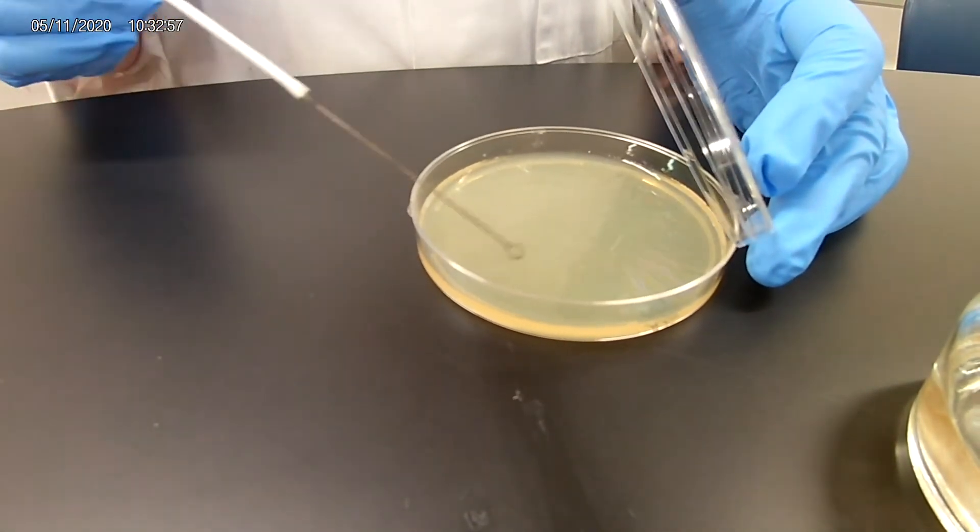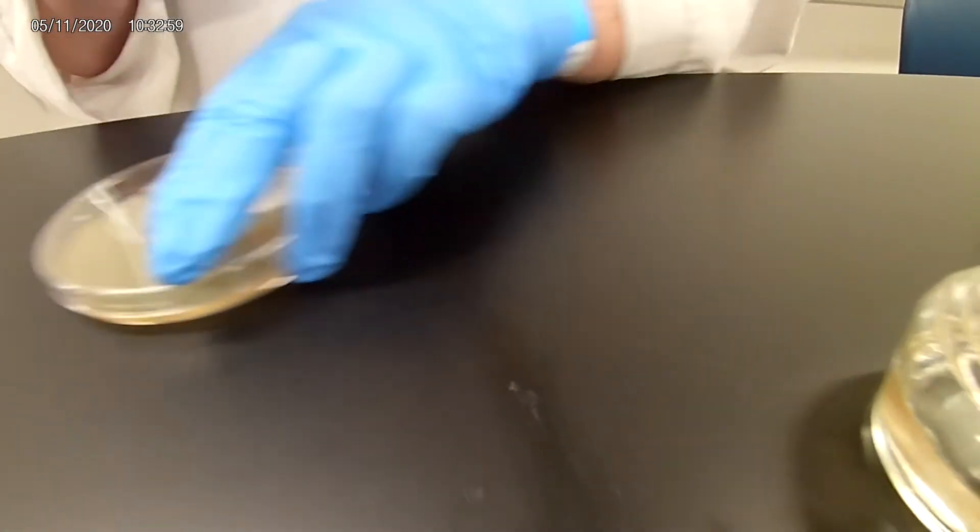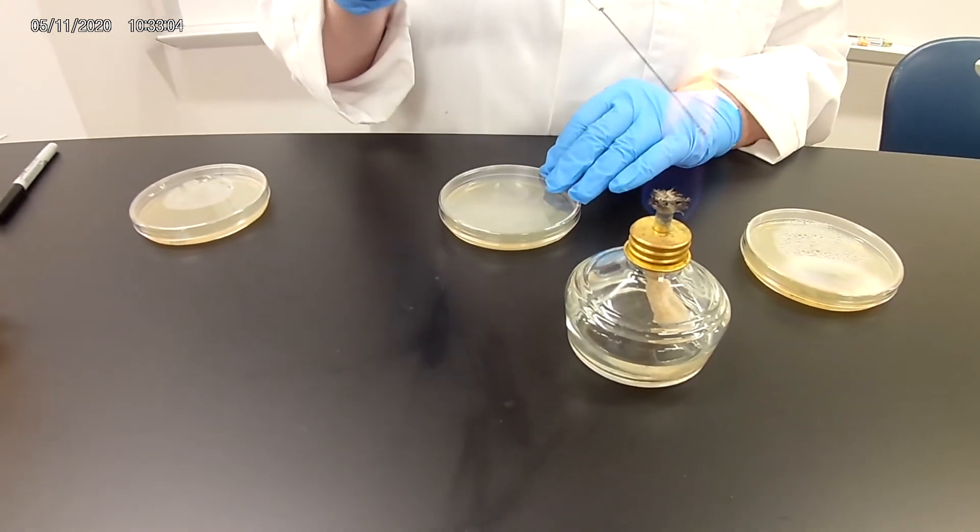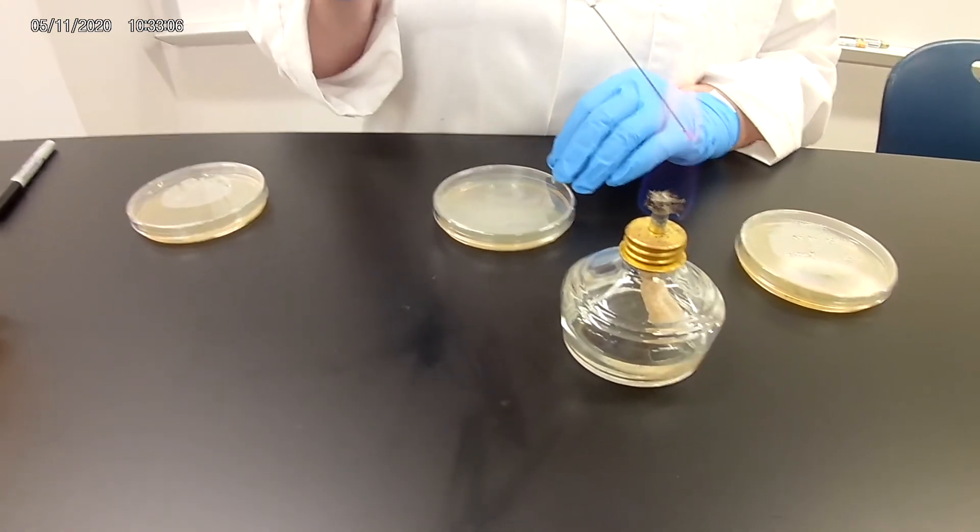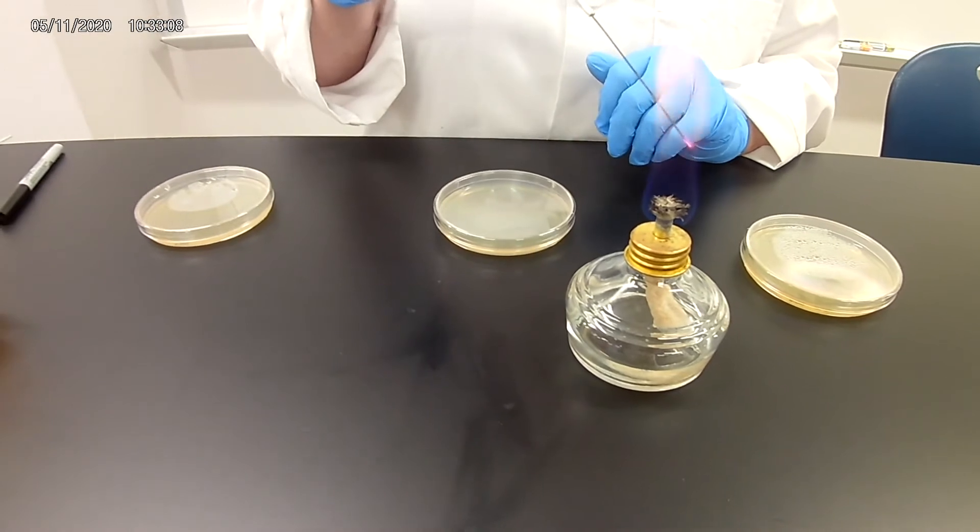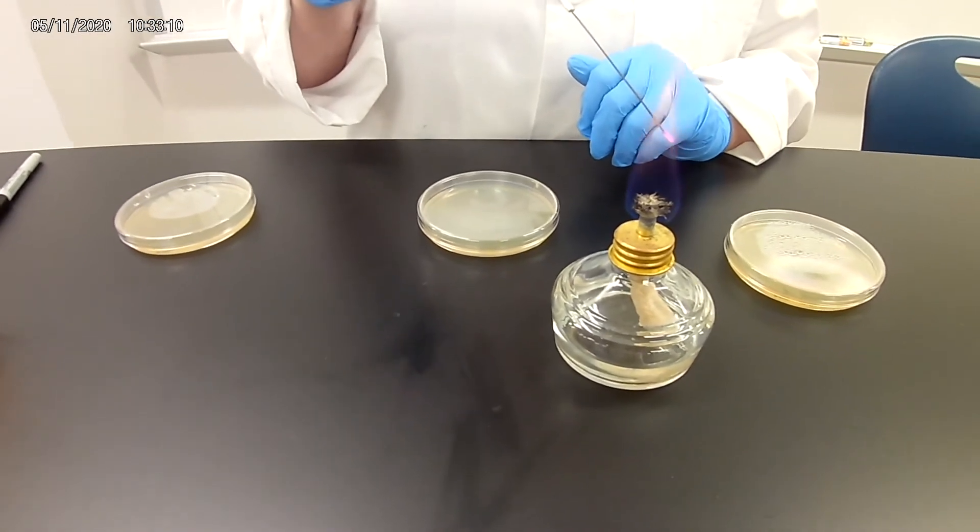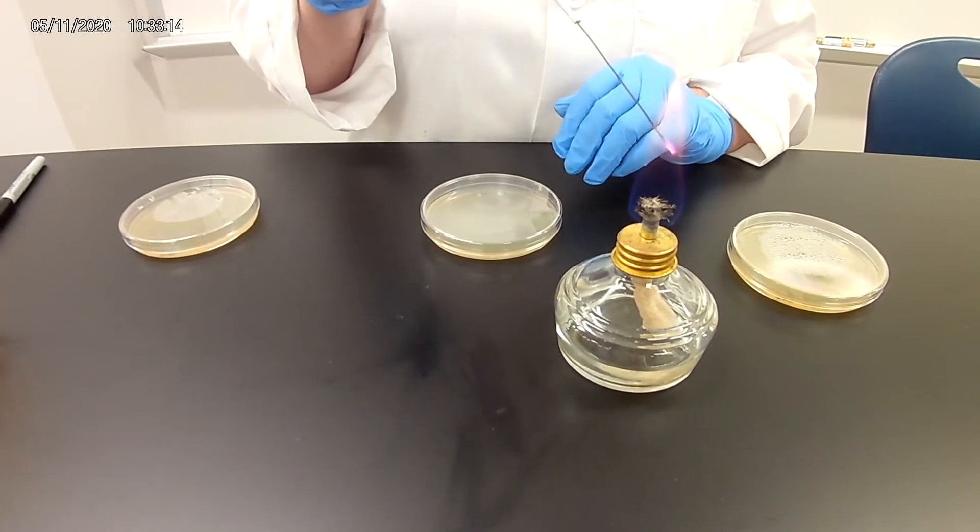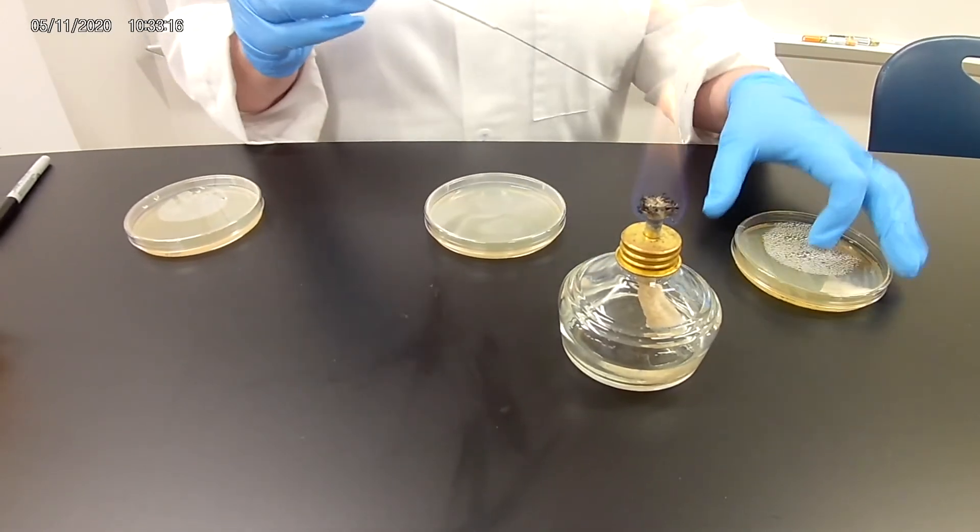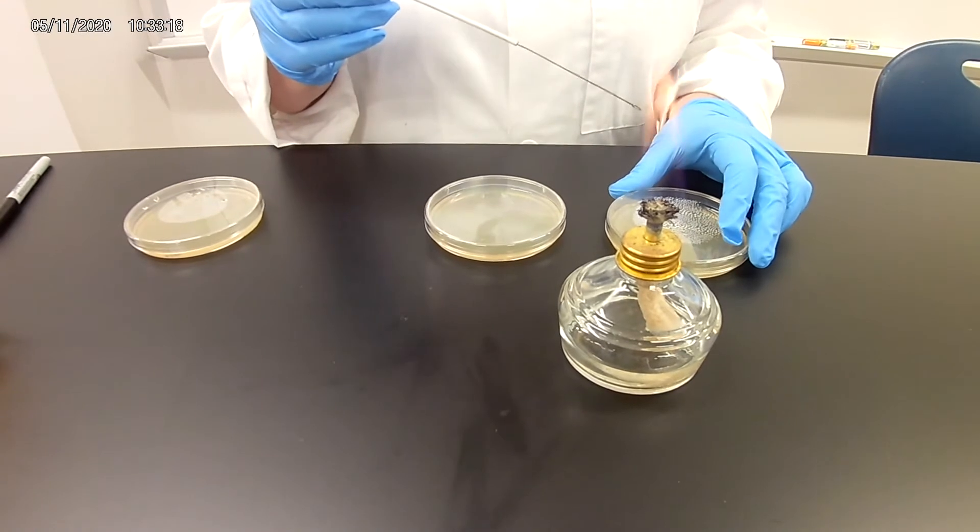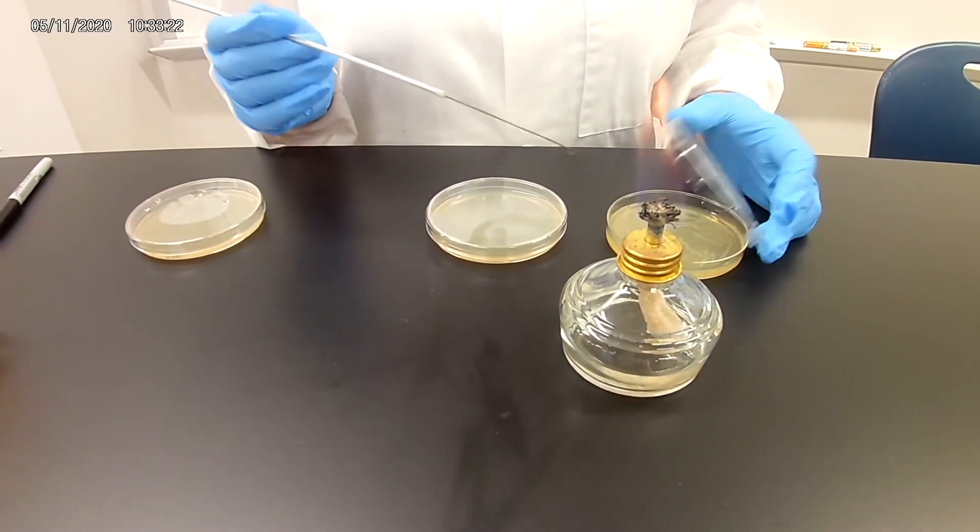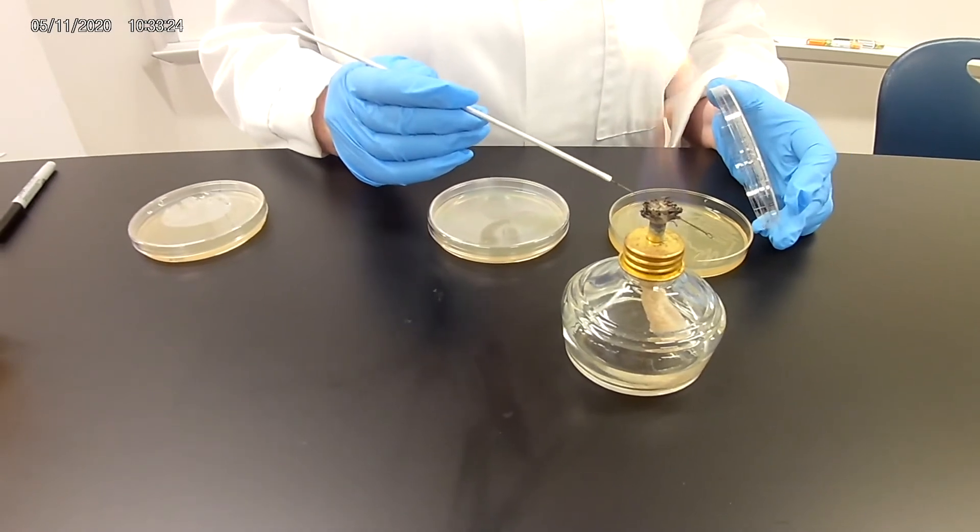So this will be our last area. That plate is now inoculated. The other method, which is the one I personally prefer doing, it's just the way I learned it, is very similar except instead of four quadrants, we're going to use three different areas, but with the same concept. We start with our initial area of going from our original stock plate.